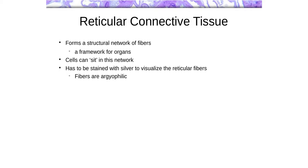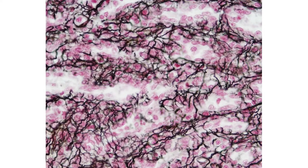Next is reticular connective tissue, which is basically a network of reticular fibers that forms a mesh on which other cells sit. To show reticular fibers we need to stain them with silver — that's why they look black here. What we're seeing is a network of highly branched, argyrophilic fibers, with a bunch of cell nuclei sitting within this matrix, just kind of waiting for things to pass by them.